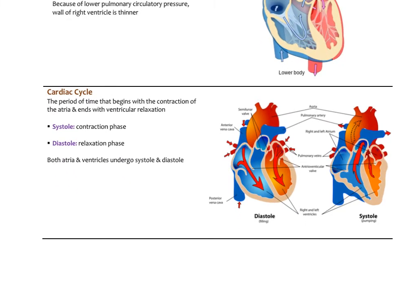The cardiac cycle is the period of time that begins with the contraction of the atria and ends with ventricular relaxation. Systole is the contraction phase, and both atria and ventricles undergo systole, but when we usually talk about systole we're talking about the ventricles. Diastole is the same — that's one cardiac cycle.